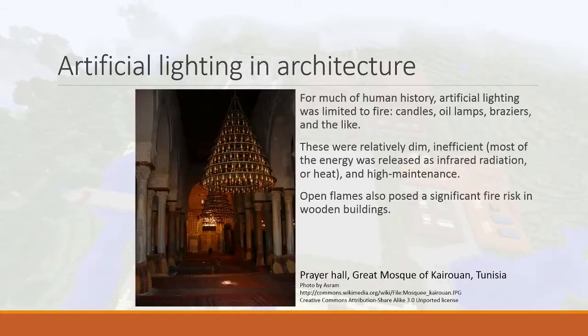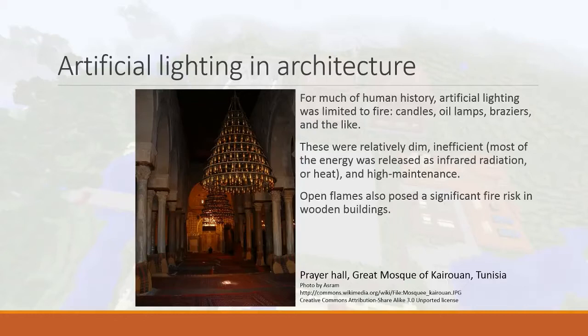In contrast to natural sunlight, artificial lighting in architecture for most of human history has been rather sad. For most of human history we used candles, lamps, braziers, and fireplaces — we had to use fire. The problem with candles and oil lamps is that they were really dim and really inefficient. Most of the energy from a candle is heat, not visible light. If you look at a picture with literally hundreds of candles on chandeliers, the ceiling is in complete shadow — that's how bad candles are.